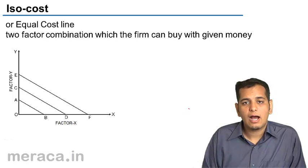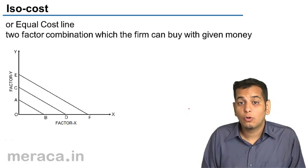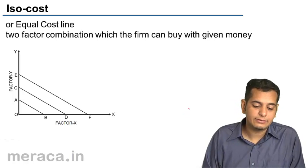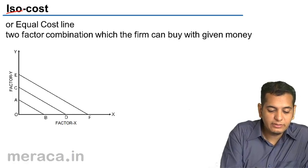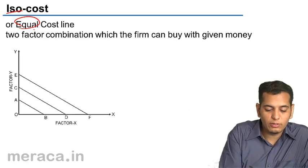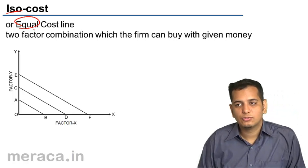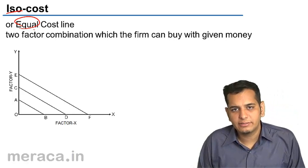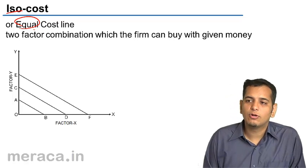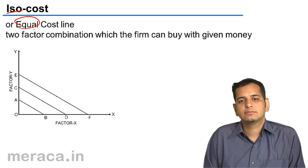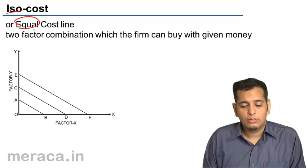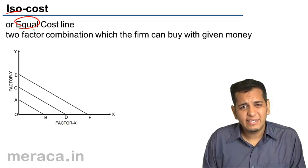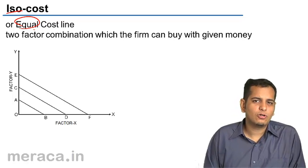Now let's see what ISO cost lines are. ISO means equal, so ISO cost lines are also called equal cost lines. Very simple to understand. But what exactly are ISO cost lines?